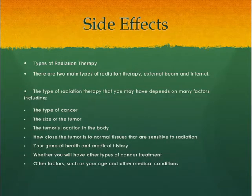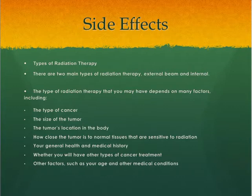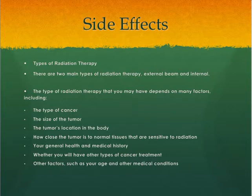There are two main types of radiation therapy: external beam and internal. The type of radiation therapy you may have depends on many factors, including the type of cancer, the size of the tumor, the tumor's location in the body, how close the tumor is to normal tissues that are sensitive to radiation, your general health and medical history, and whether you will have other types of cancer treatment.